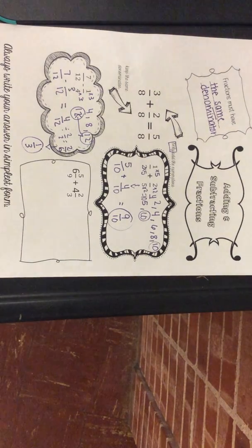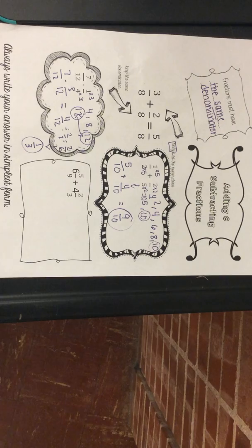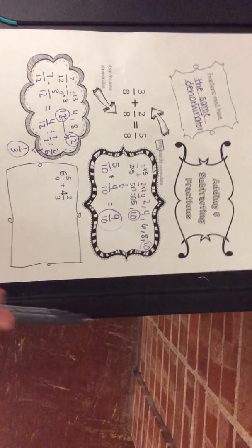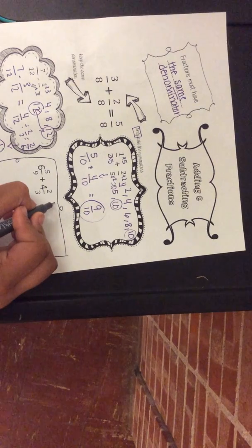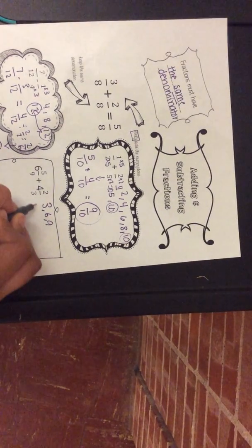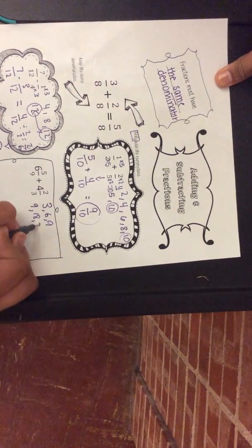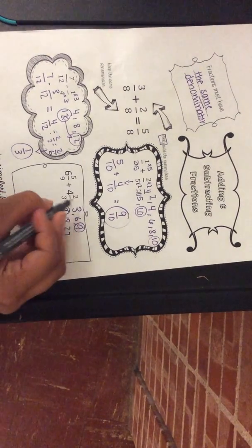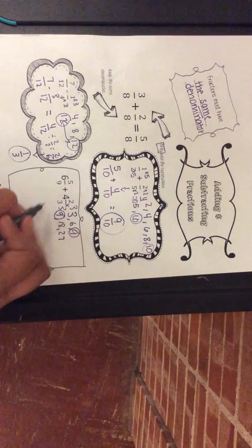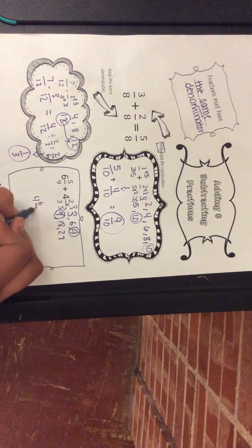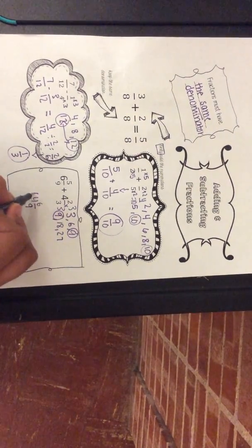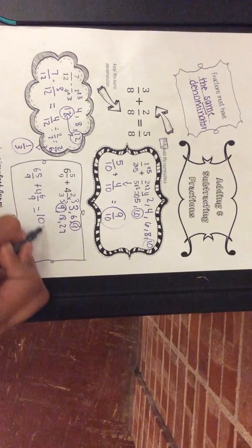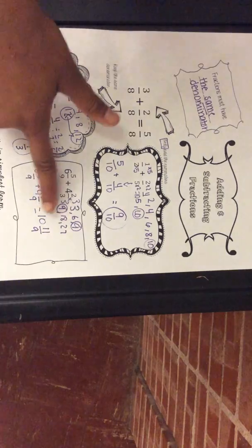Now we're going to add mixed numbers: six and five ninths plus four and two thirds. We have to make sure they have the same denominator. The common denominator is nine, so we convert two thirds by multiplying by three: two times three equals six and three times three equals nine, giving four — six over nine. So the problem becomes six and five over nine plus four and six over nine.